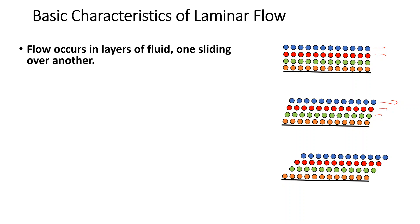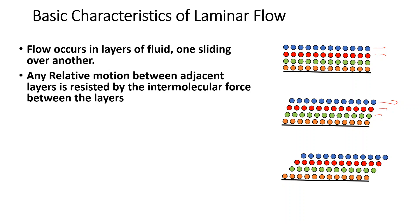Any relative motion between adjacent layers is registered by the intermolecular forces, and those intermolecular forces give rise to viscosity. If one layer tries to move at a different velocity than adjacent layers, the nearby layers will try to reduce that relative velocity. Every time there is a velocity difference, viscosity or intermolecular forces will try to resist it.